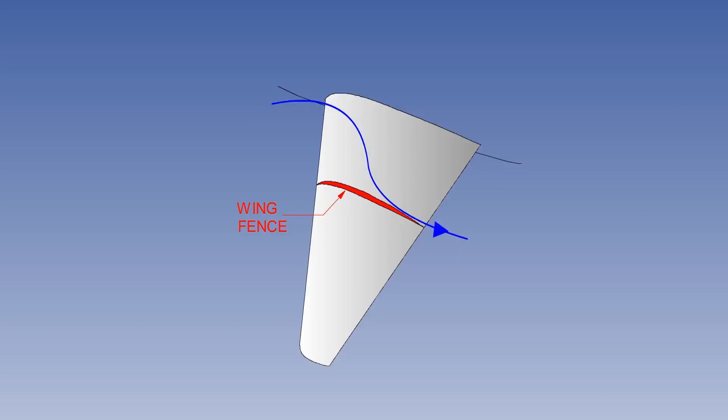Wing fences are thin upright metal strips which generally extend from leading to trailing edge and restrict the outward drift of the boundary layer.